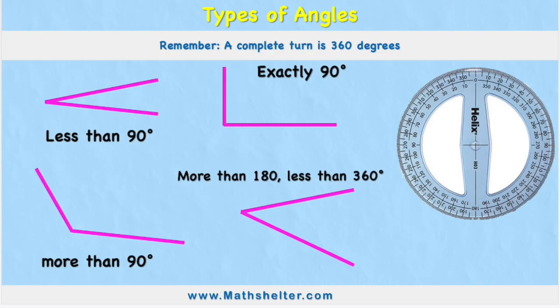Okay, so what is it we need to remember today? We need to remember that a complete turn is 360 degrees and an angle is somewhere within that full turn.